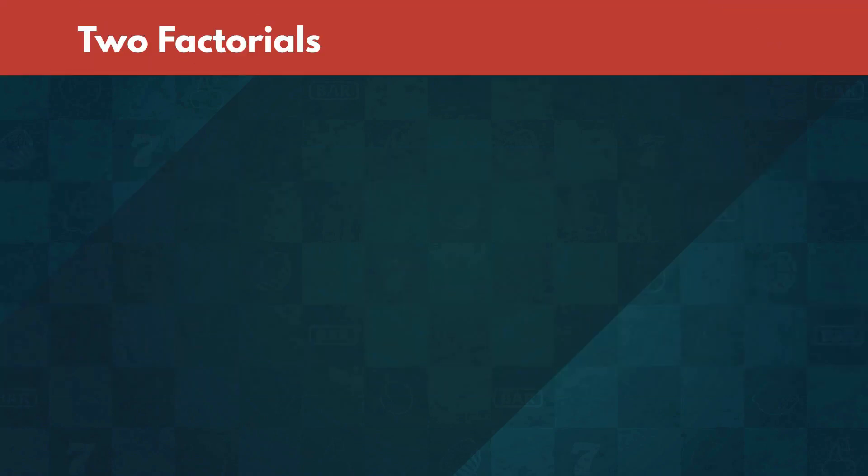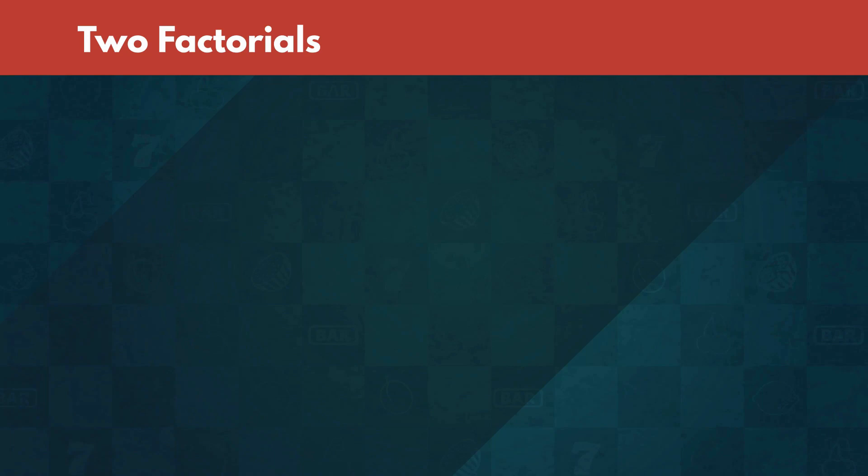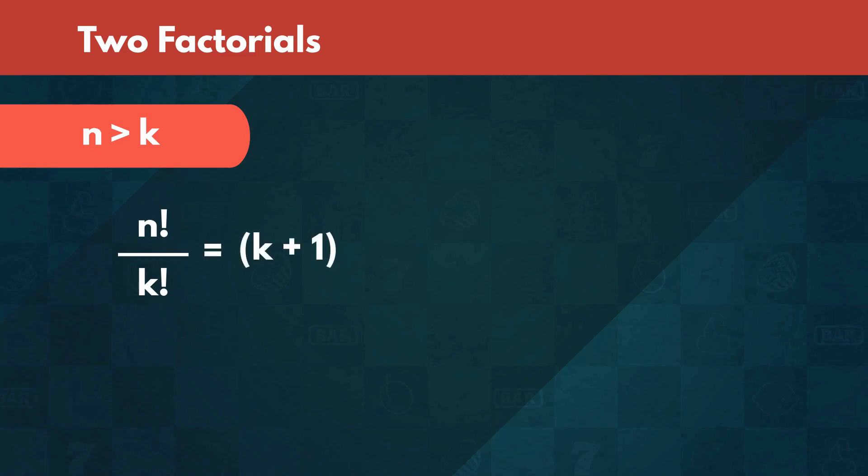Okay, great. An important observation is that if we have two natural numbers, k and n, where n is the greater number, then n factorial over k factorial equals k plus 1 times k plus 2 all the way up to n.